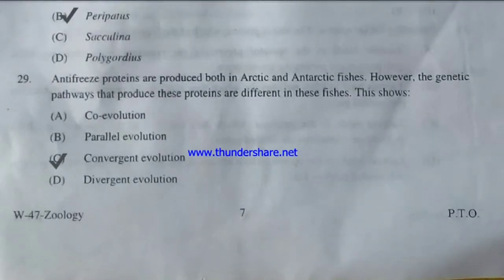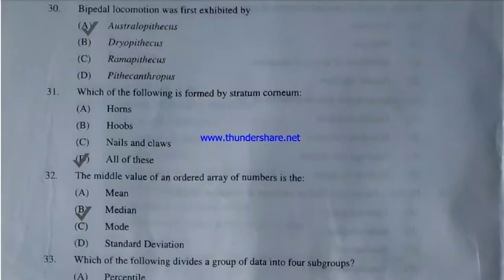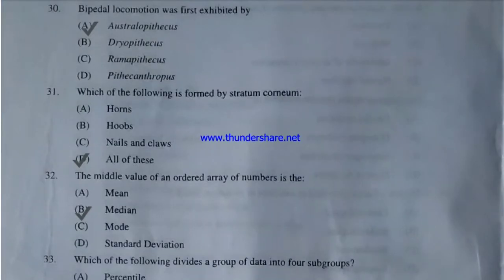Antifreeze proteins are produced in both Arctic and Antarctic fishes; however, the genetic pathways that produce these proteins are different in the two groups of fishes. This follows co-evolution, parallel evolution, convergent evolution, or divergent evolution? The answer is C — convergent evolution. Bipedal locomotion was first exhibited by Australopithecus, Dryopithecus, Ramapithecus, or Pithecanthropus? The answer is Australopithecus.